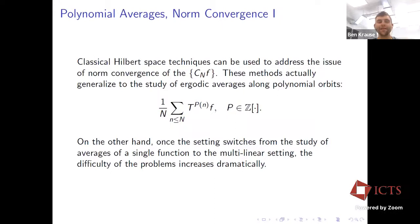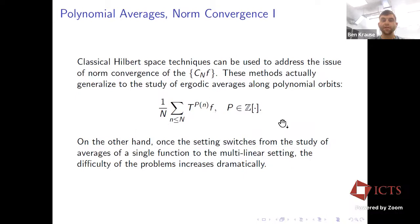Norm convergence is very well understood in the case of linear averages. For example, using the spectral theorem and a little Cauchy-Schwarz, you can prove that for any polynomial with integer coefficients, these Cesàro averages converge in norm regardless of the polynomial. So we understand polynomial orbits — norm limits of polynomial orbits — pretty well, using the spectral theorem and what's known as vdC differencing. This is highly related to the study of exponential sums, and this will be a major theme throughout this talk.